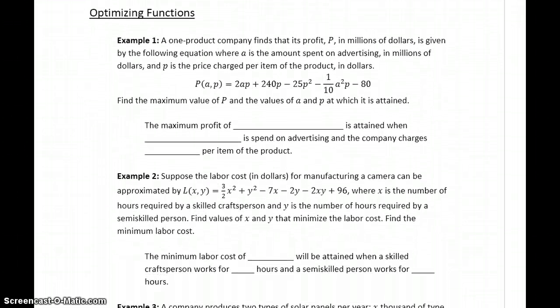So in example one, a one-product company finds that its profit P in millions is given by the following equation, where A is the amount spent on advertising in millions of dollars, and P is the price charged per item of the product. We want to find the maximum value of P and the values of A and P at which it's attained.